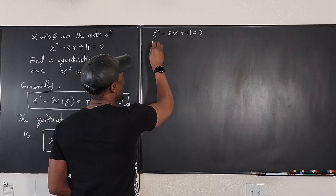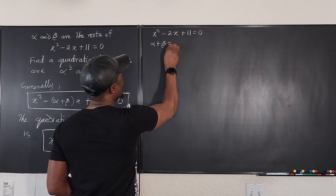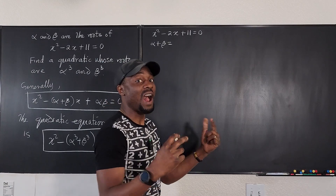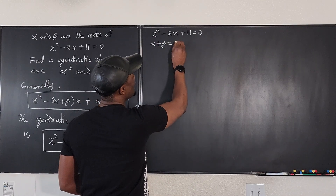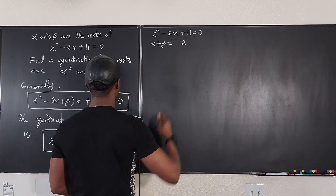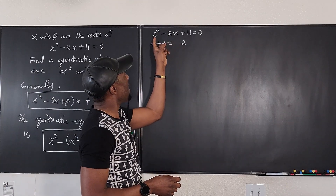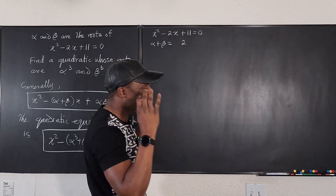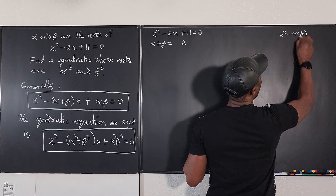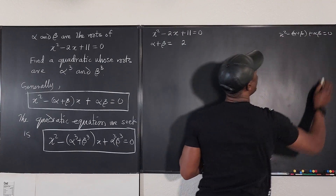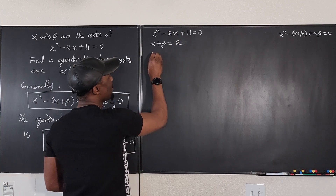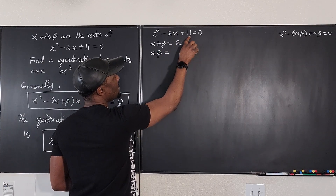Once you're able to compute those two values, you just plug them in and you're done. Alpha plus beta — we can read it from the equation — and alpha beta we also have. So the form we're going to use is x squared minus (alpha plus beta) times x plus alpha beta equals zero. Alpha plus beta is 2, and alpha beta is 11.